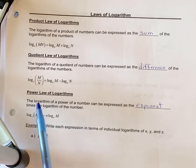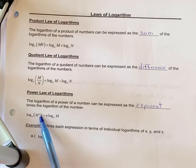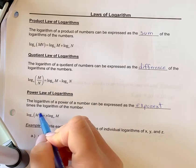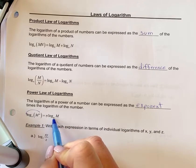Power law. The log of a power of a number can be expressed as the exponent times the logarithm of the number. If I've got an exponent in my argument, then it moves out front as a coefficient. This number has now moved here, so now it's n times log a m.